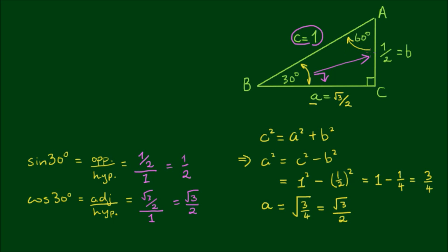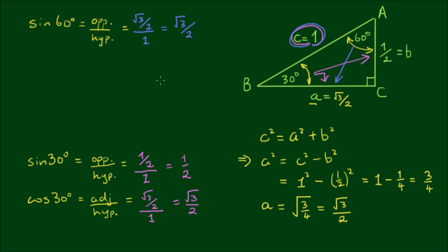Now let's focus on angle A. Sine of angle A — sine of 60 degrees — is equal to the opposite side of 60 degrees divided by the hypotenuse. Opposite to 60 degrees is the side length root 3 over 2, divided by the hypotenuse of 1. So sine of 60 degrees equals root 3 over 2. And cosine of 60 degrees is the adjacent side divided by the hypotenuse. Adjacent to 60 degrees is side B, equal to one half, divided by the hypotenuse of 1. So cos of 60 degrees equals one half.